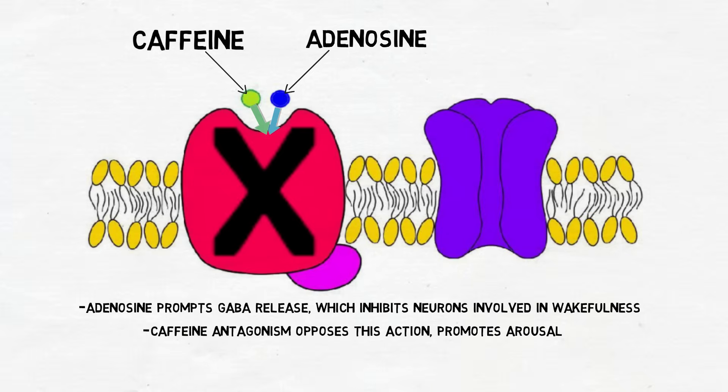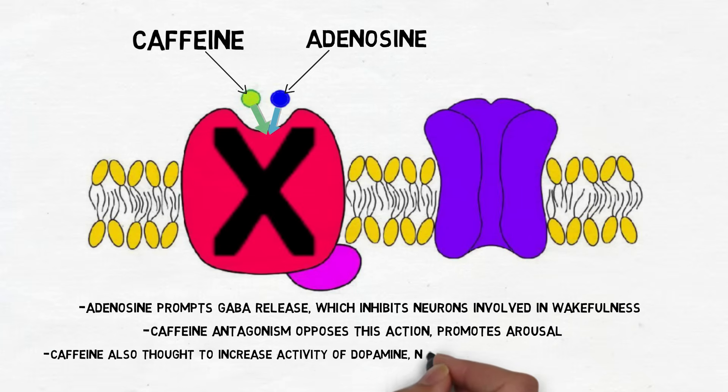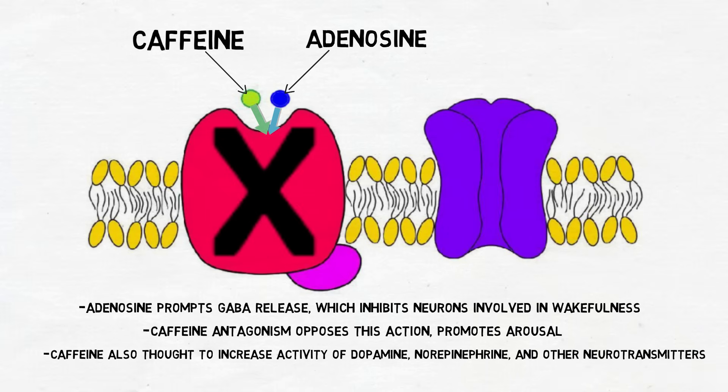Adenosine receptors are also thought to be involved in reducing the activity of a number of neurotransmitters, including dopamine and norepinephrine, through methods ranging from inhibiting neurotransmitter release to affecting neurotransmitter binding. Thus, caffeine also blocks these effects, which may contribute to caffeine's stimulating and reinforcing actions.